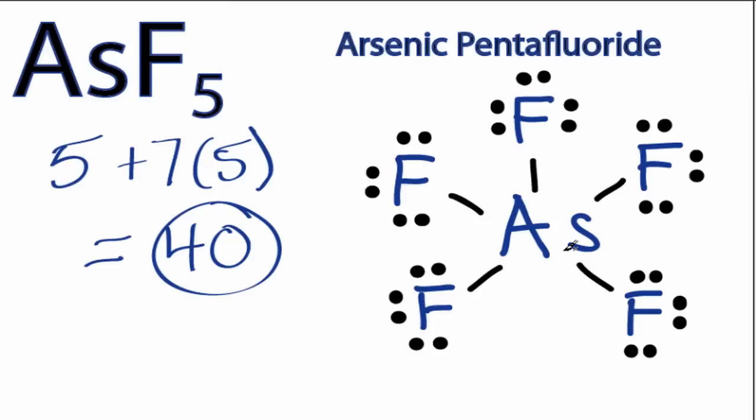That's okay, though. Arsenic is in period 4 of the periodic table, so it can have more than 8 valence electrons.